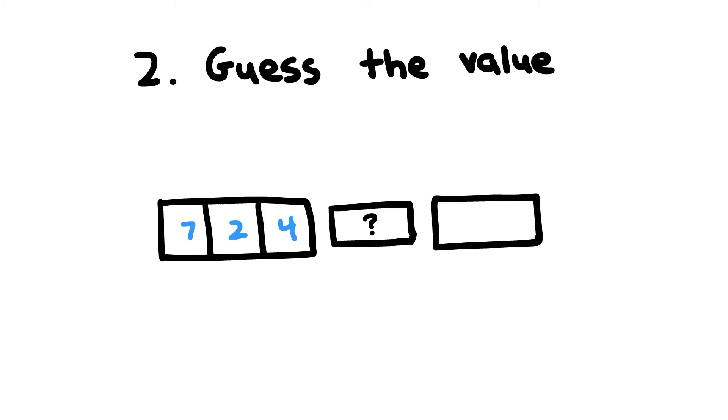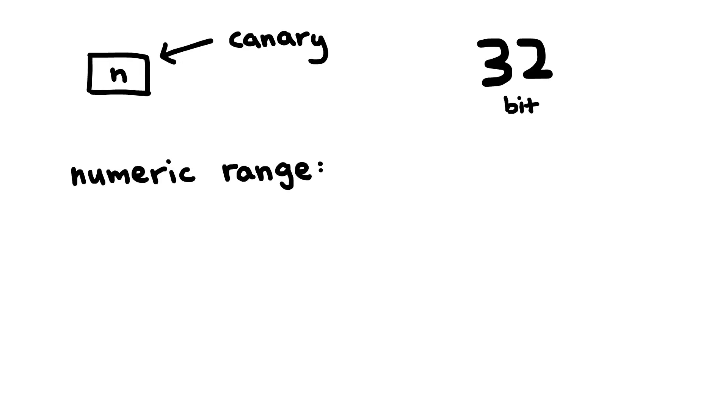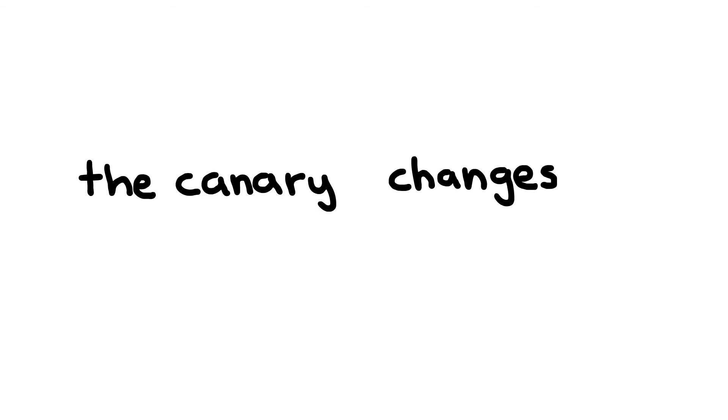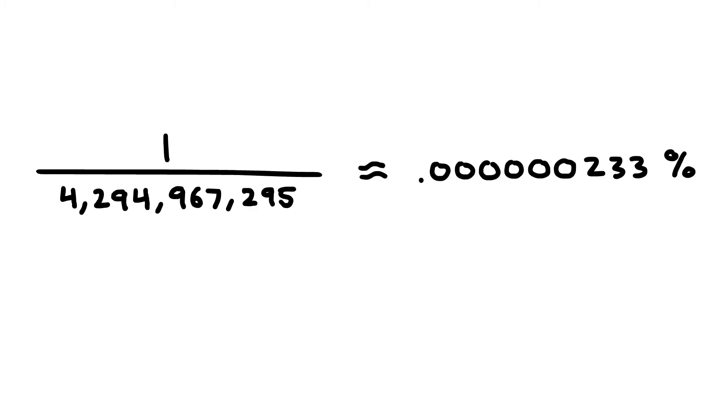The second way to bypass a canary is to guess the value. Astute viewers may have noticed that a canary can be bypassed by guessing the value and writing it back in place when doing a buffer overflow. But exactly how feasible is it to guess the canary value? Depending on what computer you're on, a canary can be, say, a 32-bit number, meaning that its numeric range is somewhere between 0 and roughly 4 billion. Given that the canary changes for each program run, our chances of guessing the canary correctly is roughly 1 over 4 billion. So, not very good.